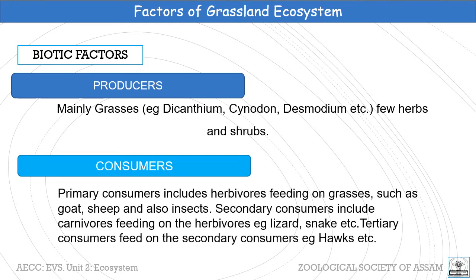The primary consumers are mainly herbivores which feed on the grasses. Secondary consumers are small carnivorous animals which feed on the herbivorous animals. Tertiary consumers are carnivores which feed on the secondary consumers. And if a quaternary consumer is present, it will be a top carnivore feeding on the tertiary consumers.